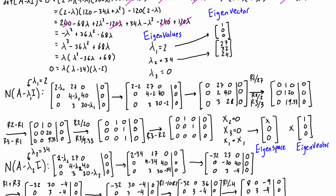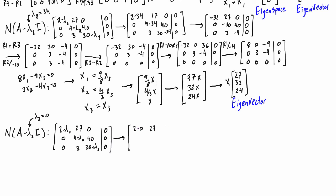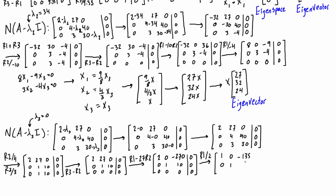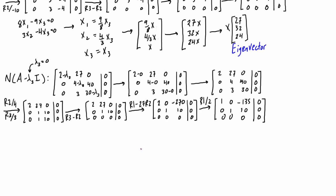Now let's do the same for λ₃. We set up the null space of A minus λ₃I. Because λ₃ is equal to 0, this ends up being the same as just taking the null space of matrix A — but regardless, it's still equivalent to the null space of A minus λ₃I. We perform elementary row operations and are left with this matrix. Converting to a system of linear equations: the first line gives x₁ minus 135x₃ equals 0, and the second line gives x₂ plus 10x₃ equals 0. Rewriting x₁ in terms of x₃ gives us x₁ equals 135x₃.